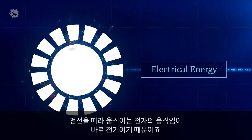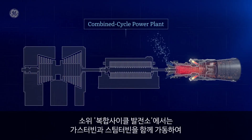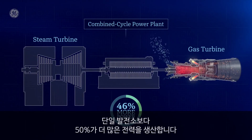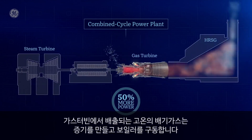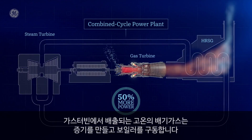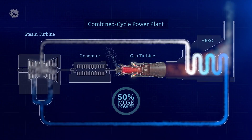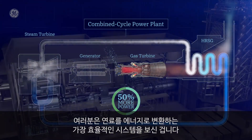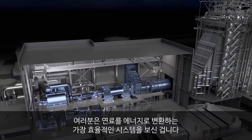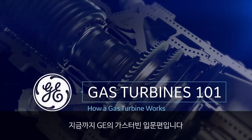In what's called a combined cycle power plant, the gas turbine can be used in combination with a steam turbine to generate 50% more power. The hot exhaust from the gas turbine is used to create steam in a boiler, which then spins the steam turbine blades with their own drive shaft that turns the generator. What you end up with is the most efficient system for converting fuel into energy — and that's your GE Gas Turbine 101.